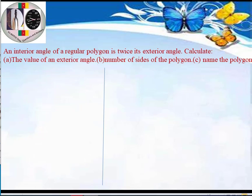Question 9. This question says that an interior angle of a regular polygon is twice its exterior angle. Calculate the value of an exterior angle, find the number of sides of the polygon, and hence name the polygon.